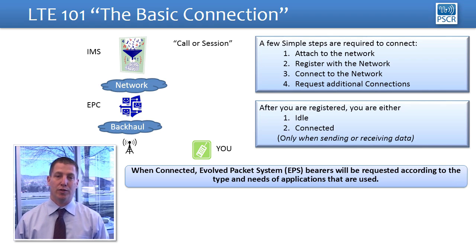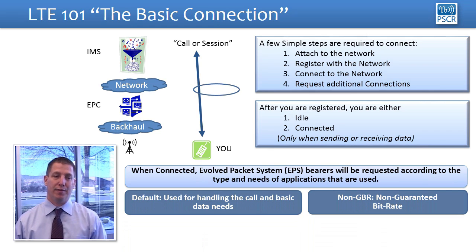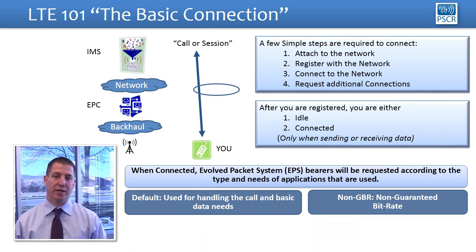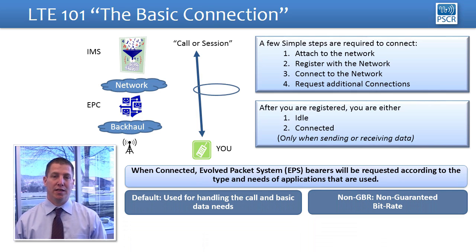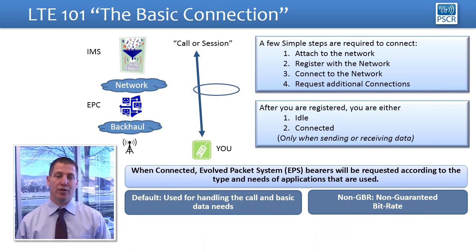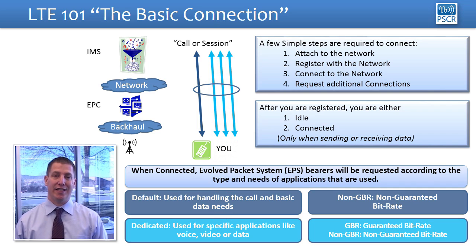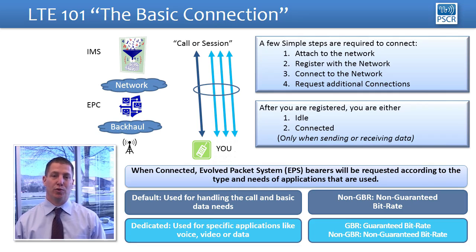When your device connects to the network, it's going to establish something called a default bearer. A bearer is like a data pipe and it's used for signaling — in other words, it's used to talk to the network, tell it where you're at and what your conditions are so the network can serve you better. It's also used for basic data connections like email, texting, and messaging — just as-needed data service. You can also establish what are called dedicated bearer connections, which are dedicated to specific applications or services. So if you use voice over LTE, streaming video, or audio applications, you might have dedicated data bearers to support those services.